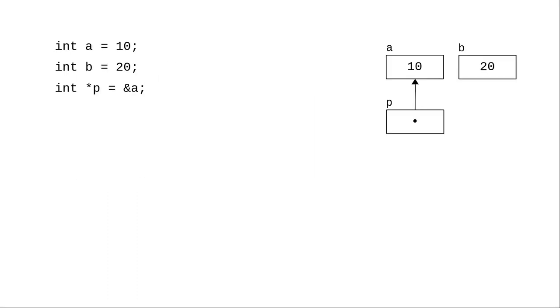When pointers enter the scene, there are two things that can change. You can change the value of the pointer to make it refer to another variable, or you can change the value of the variable that the pointer is pointing to, or you can change both.